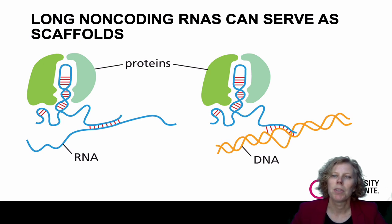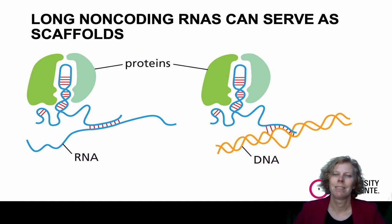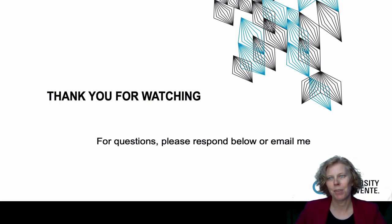Another example of scaffolding is the RNA molecule in telomerase, the enzyme that duplicates the ends of eukaryotic chromosomes, where it functions to hold different subunits together. Thank you for watching. This was the last of four lectures on control of gene expression. If you have any questions, please email me.